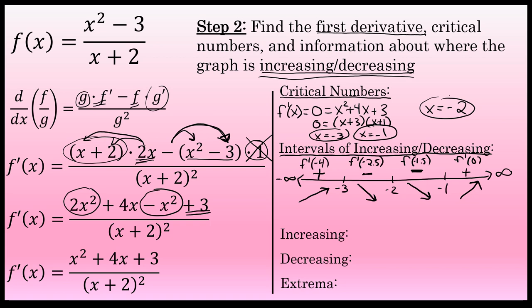The function is increasing on the open intervals from negative infinity to negative 3, and from negative 1 to infinity. The function is decreasing from negative 3 to negative 2, and decreasing again from negative 2 to negative 1. I cannot say it's decreasing the whole way from negative 3 to negative 1, because there's a vertical asymptote at x equals negative 2 — a discontinuity in the graph.